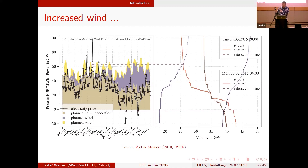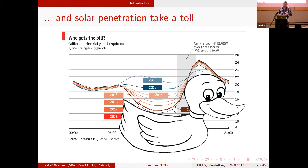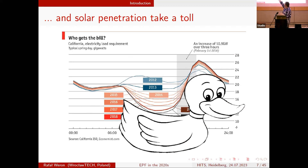Wind and solar must be taken when the sun shines and the wind blows. With solar there's the duck curve — you have a morning peak, and during the day there's so much solar generation that conventional power isn't needed. From year to year, with more solar panels, this midday dip goes further down. The term 'duck curve' was coined by the California system operator but you can see it in every market nowadays.